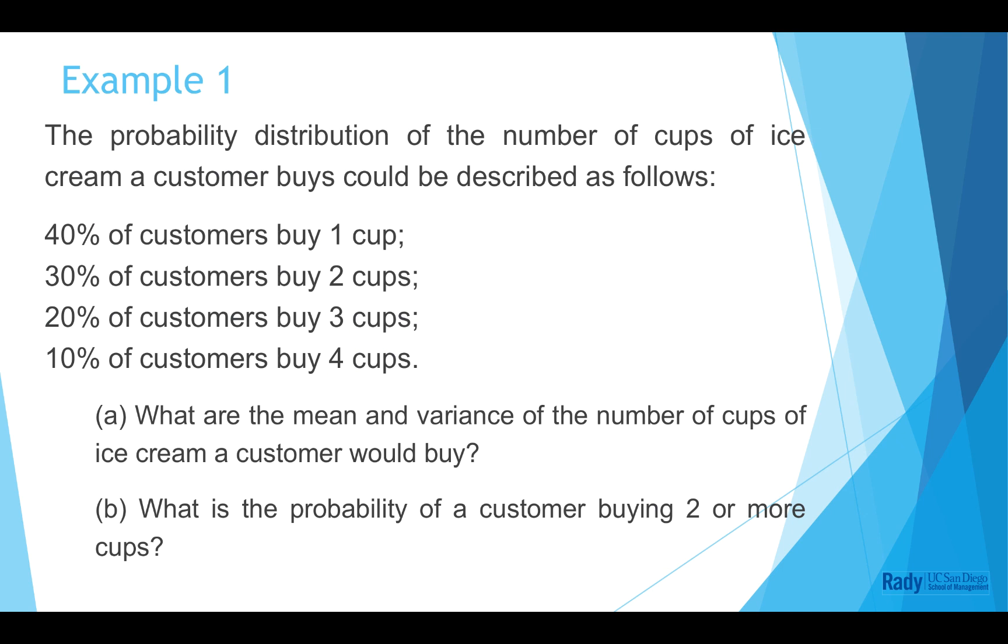The probability distribution of the number of cups of ice cream a customer buys could be described as follows: 40% of customers buy 1 cup, 30% of customers buy 2 cups, 20% buy 3 cups, and only 10% will buy 4 cups.